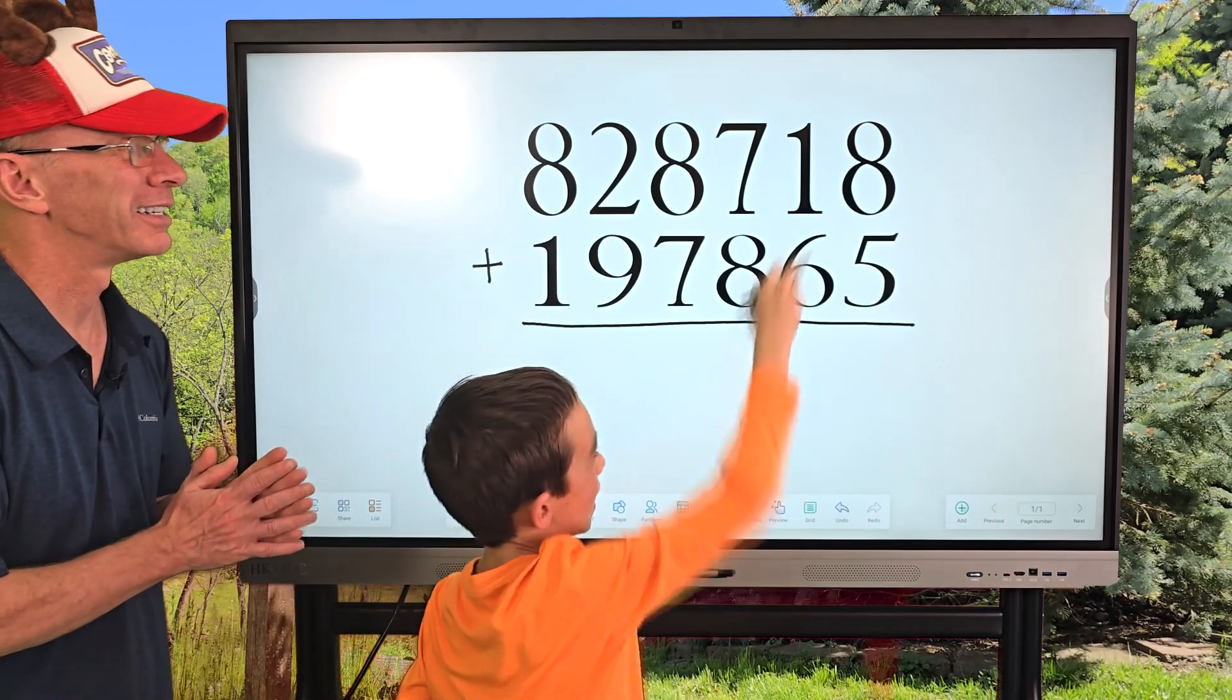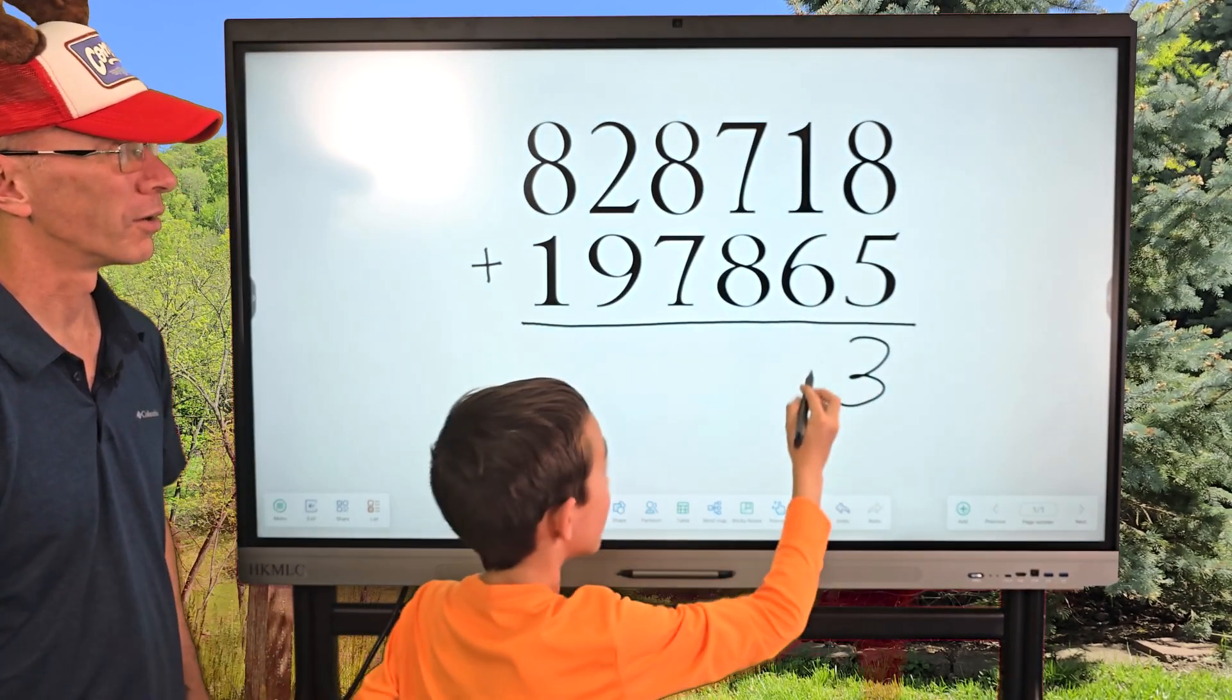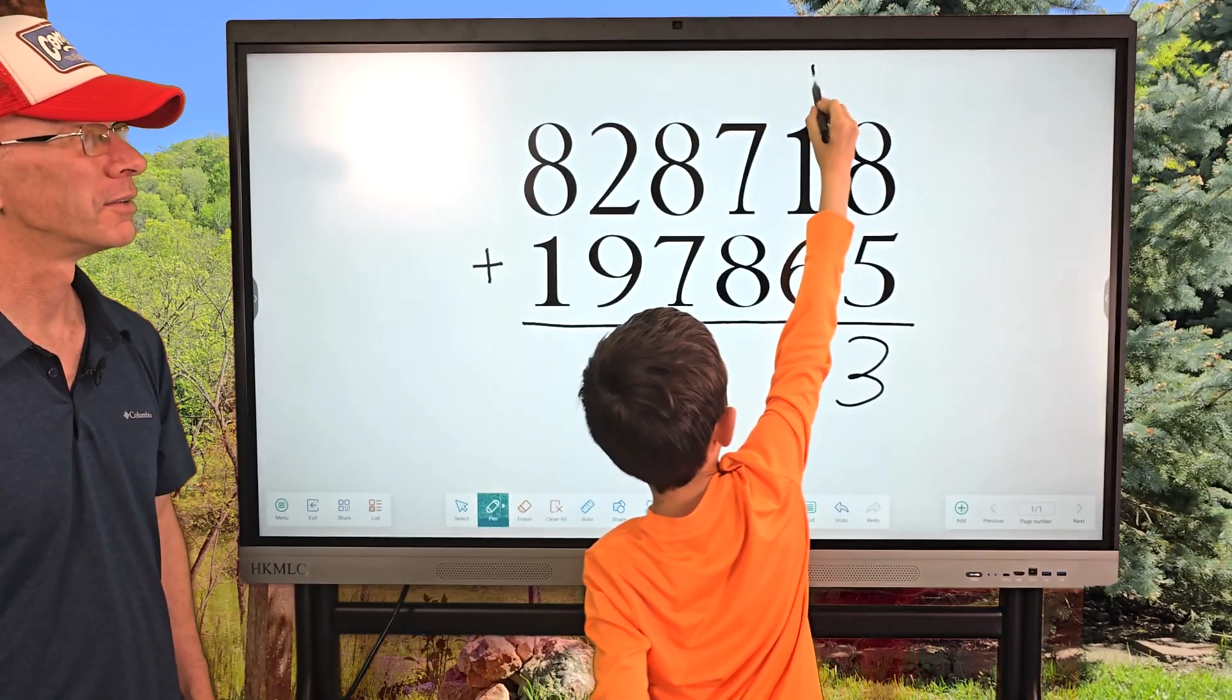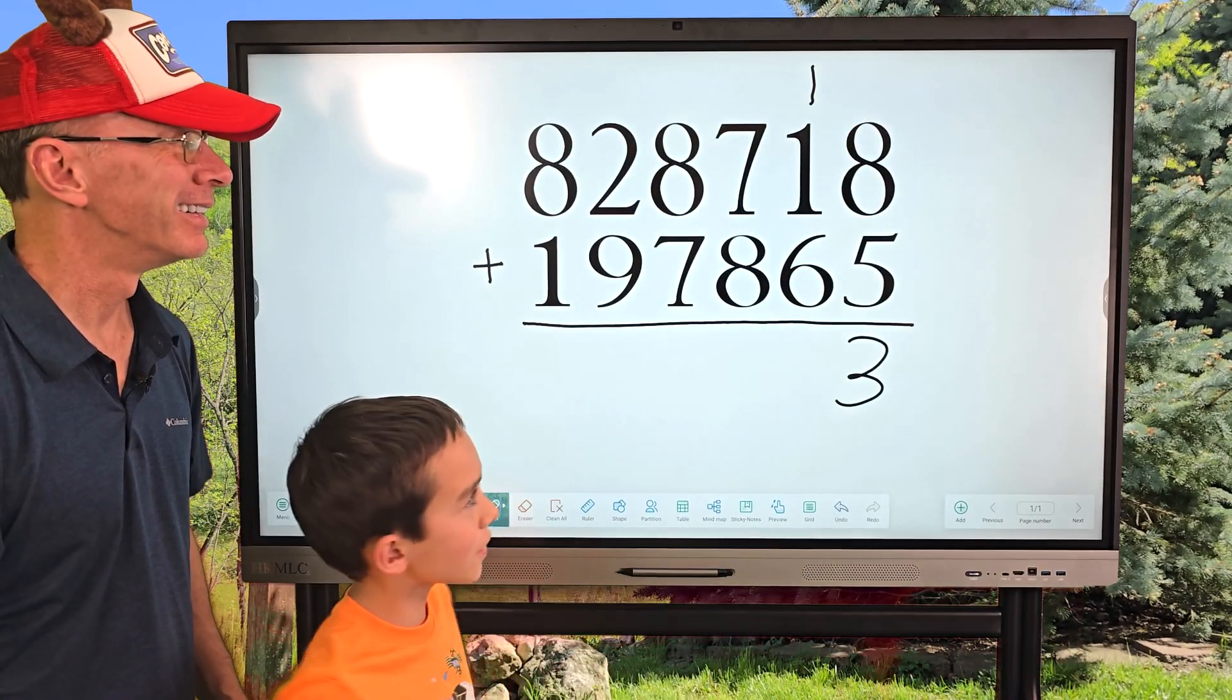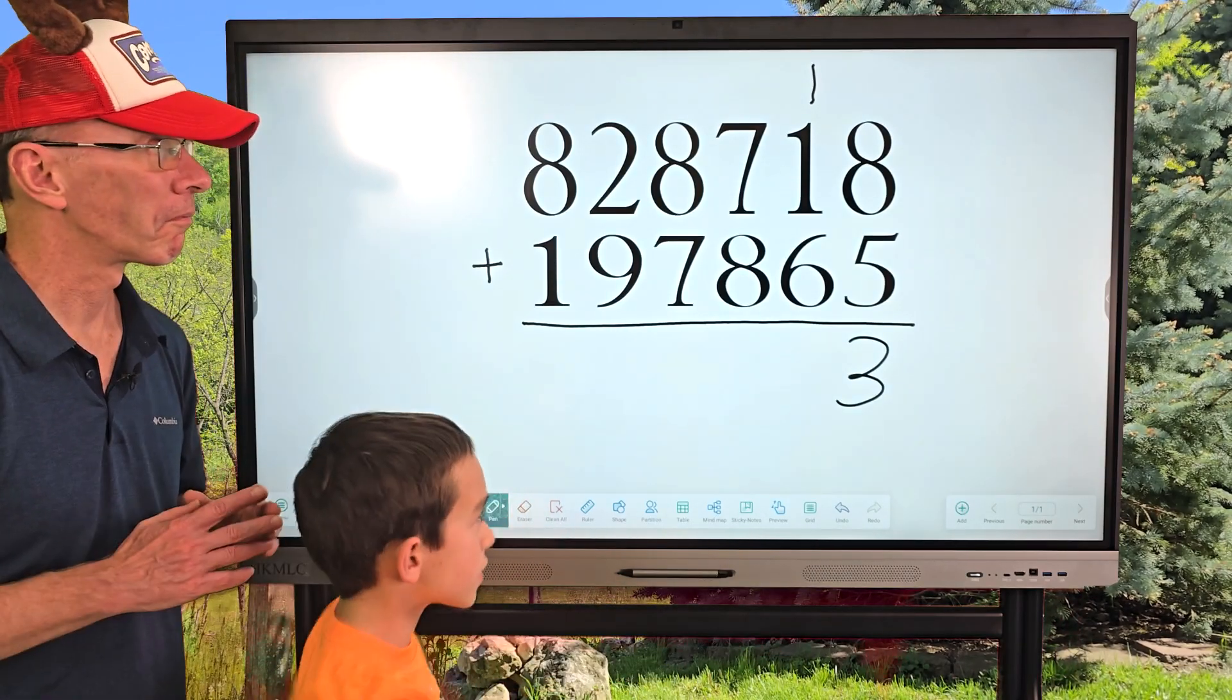All right, go ahead and get started here. 5 plus 8 equals 13, so you put the 3 down here. Okay. And then you carry the 1. All right. 6 plus 1 equals 7 plus another 1 equals 8.